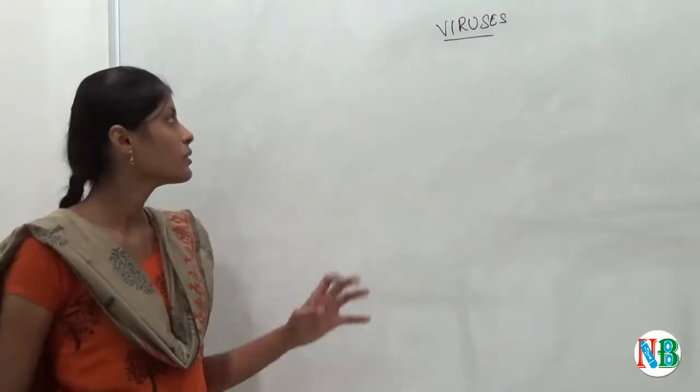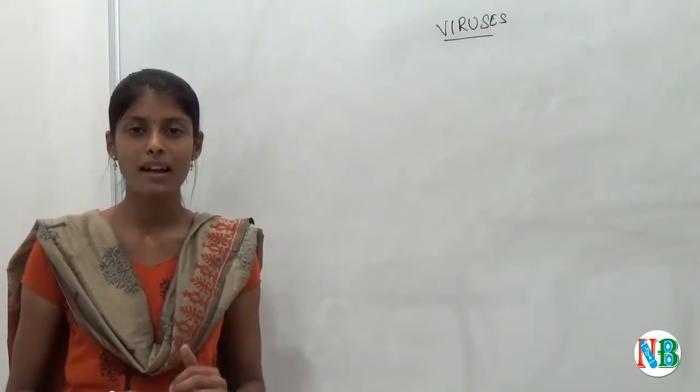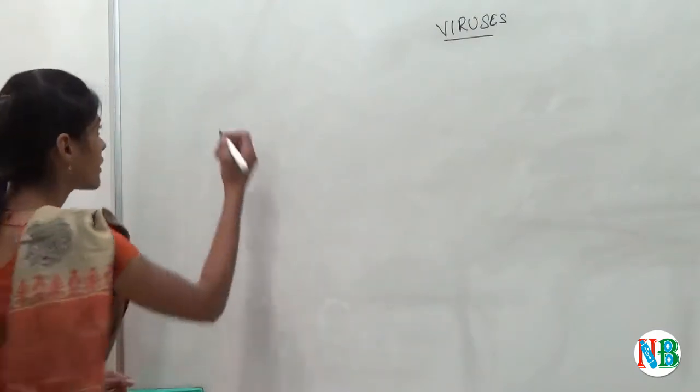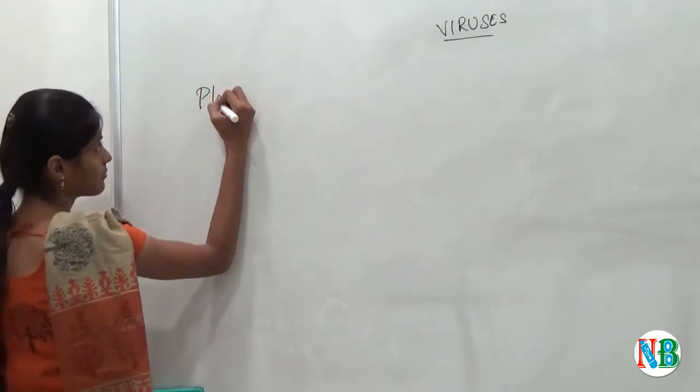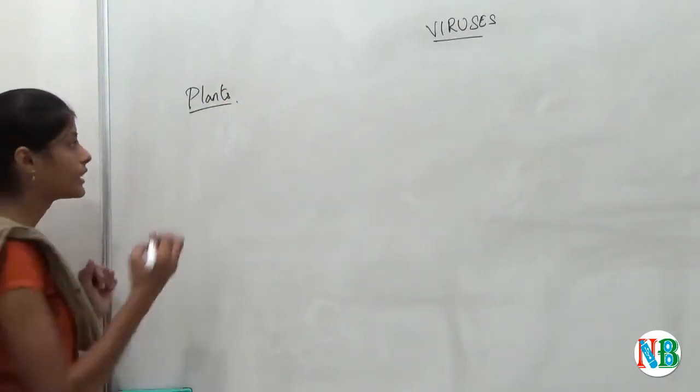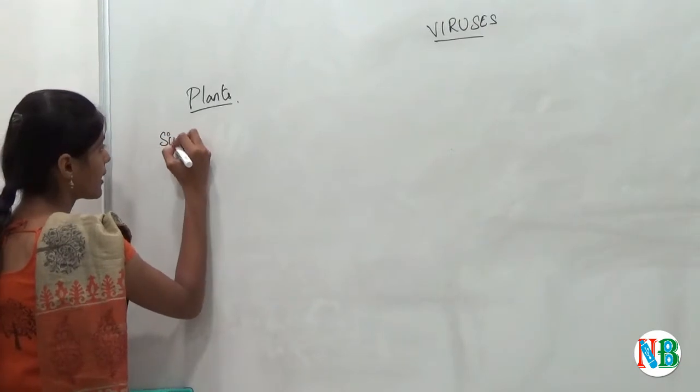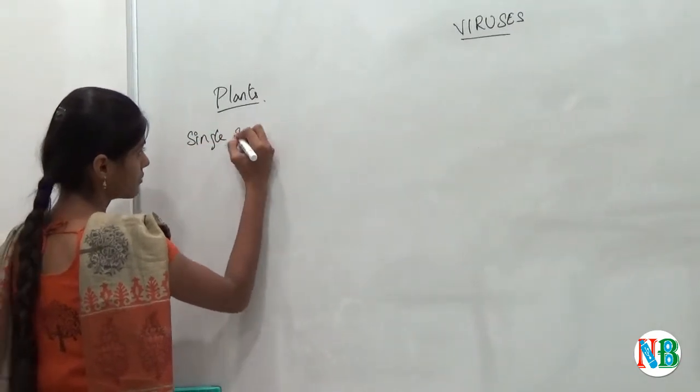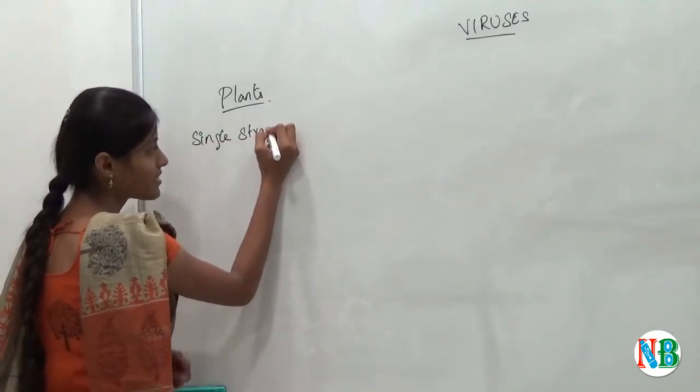Now we will see how viruses affect plants, bacteria and animals. First, plants. The virus which affect plants contains single-stranded DNA.